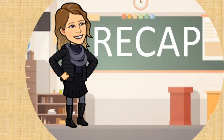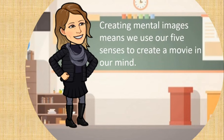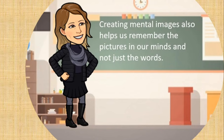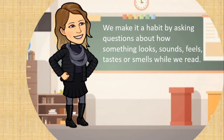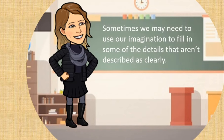Here's a recap of what we've just learned. Creating mental images means we use our five senses to create a movie in our mind. Creating mental images also helps us remember the pictures in our minds and not just the words. Creating mental images is super important, so we need to make it a habit every time we read. We make it a habit by asking questions about how something looks, sounds, feels, tastes, or smells while we read. Sometimes we may need to use our imagination to fill in some of the details that aren't described as clearly. This helps us understand better.